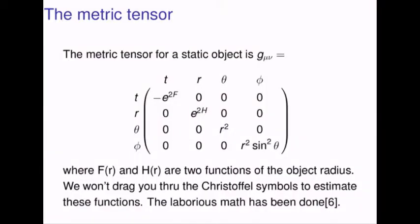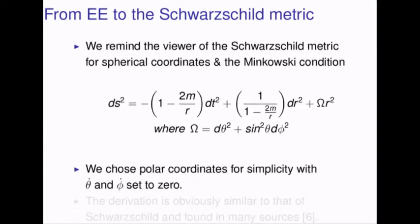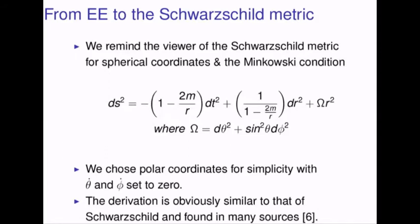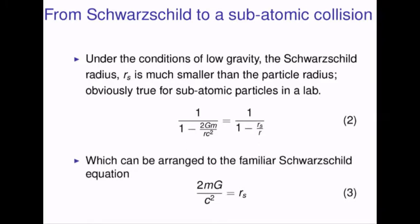We remind the viewer of the Schwarzschild metric for spherical coordinates and the Minkowski condition, as presented below. We choose polar coordinates for simplicity, with theta and chi set to zero. This derivation is obviously similar to that of Schwarzschild and is found in many sources, as our reference six. Under the conditions of low gravity, the Schwarzschild radius R sub s is much smaller than the particle radius — obviously true for subatomic particles in the lab, as presented in equation two. This can be rearranged to the familiar Schwarzschild equation as in our equation three.